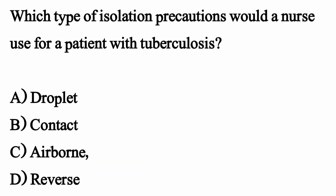Which type of isolation precautions would a nurse use for a patient with tuberculosis? The correct option is option C, Airborne.